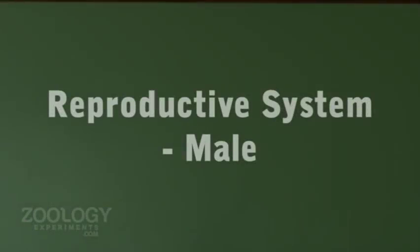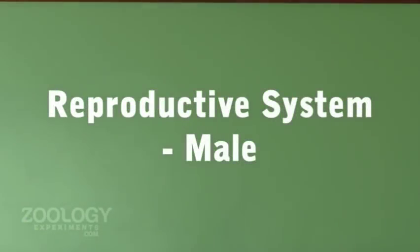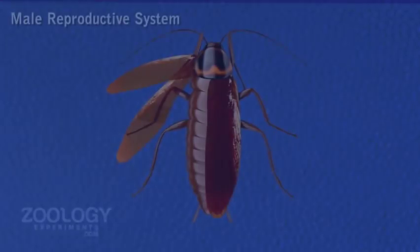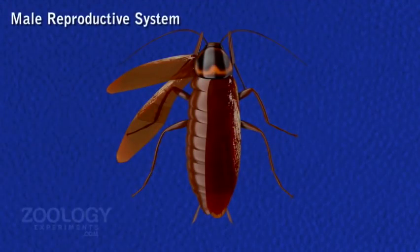Reproductive System. In cockroach, the sexes are separate, called dioecious. They show sexual dimorphism in the internal reproductive organs as well as external morphology.